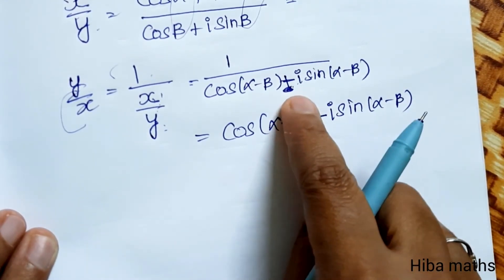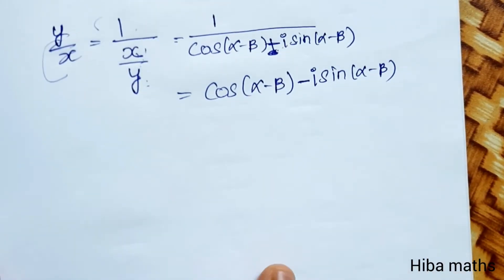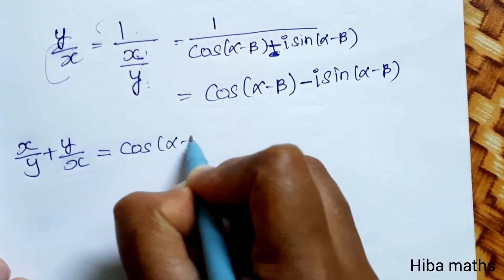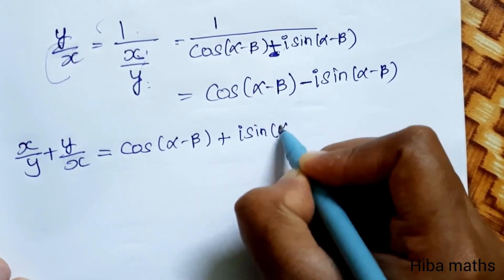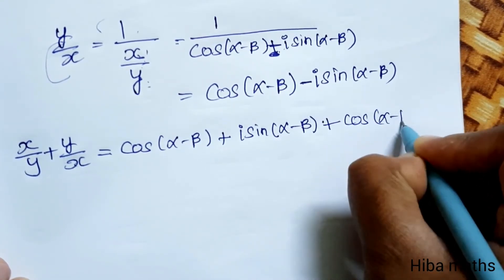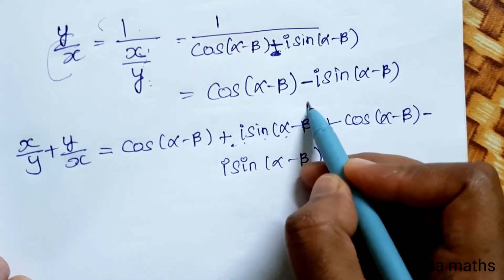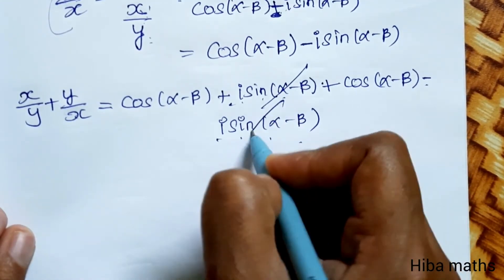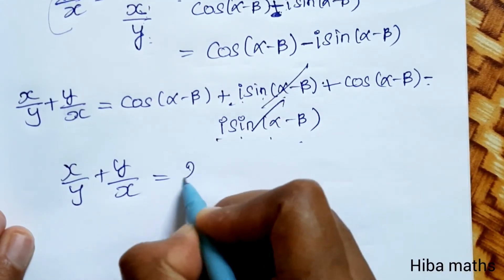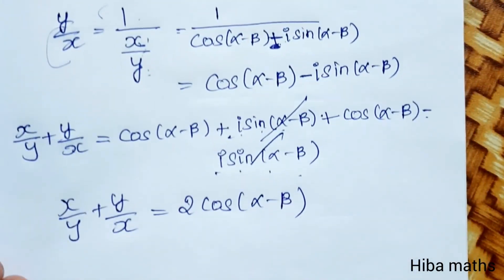Adding the two values: x by y plus y by x equals cos(alpha minus beta) plus i sin(alpha minus beta) plus cos(alpha minus beta) minus i sin(alpha minus beta). The i sin terms cancel out, so x by y plus y by x equals 2 cos(alpha minus beta). Hence proved. Thank you so much for watching.